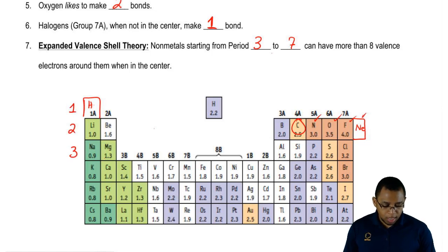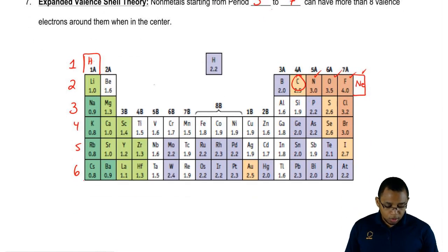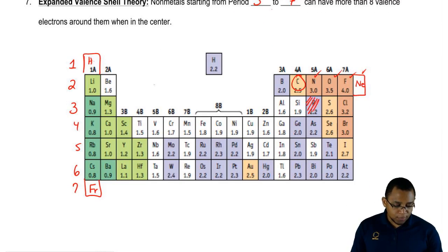This is period 1, 2, 3, 4, 5, 6. There's also francium down here which will be 7. We're saying period 3 nonmetals, so phosphorus, sulfur, chlorine, and lower all the way down to 7. So selenium, bromine, iodine, and of course the noble gases as well.